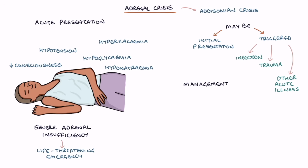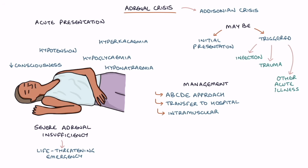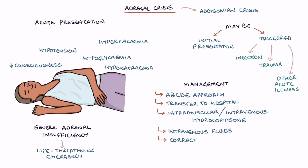Management of adrenal crisis involves an ABCDE approach to initial assessment and arranging transfer to hospital, intramuscular or intravenous hydrocortisone to replace the missing steroids, intravenous fluids, correcting the hypoglycemia — for example with intravenous dextrose — and careful monitoring of the electrolytes and fluid balance.